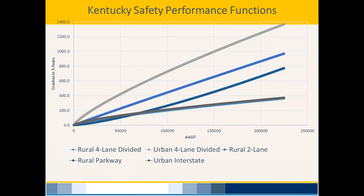Here are a few other example SPFs. The shape can vary: some are convex, some are concave, some appear nearly linear but technically are not. Remember, the SPF is a line of best fit — a non-linear line generally fits random data better than a linear line.